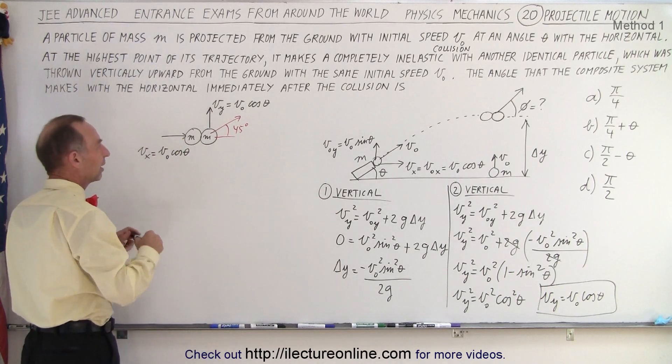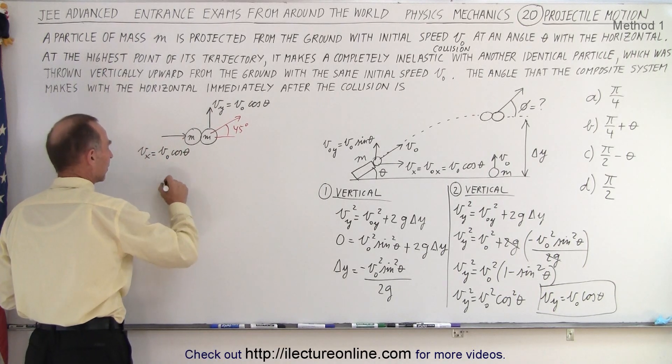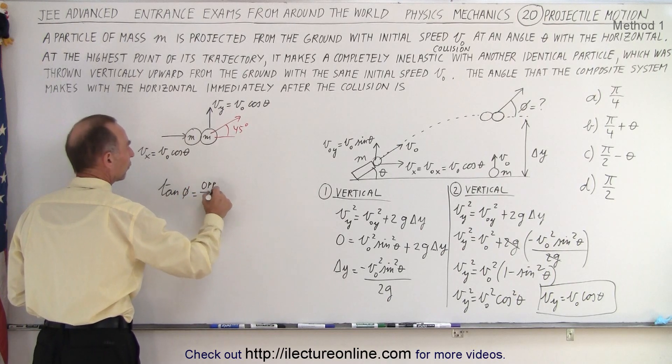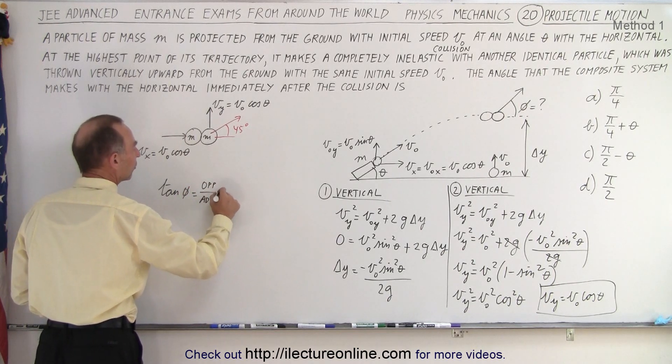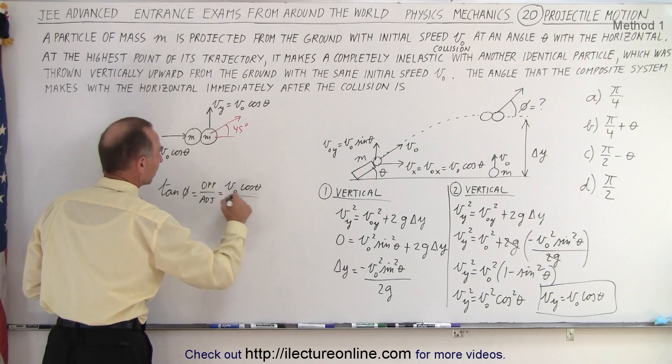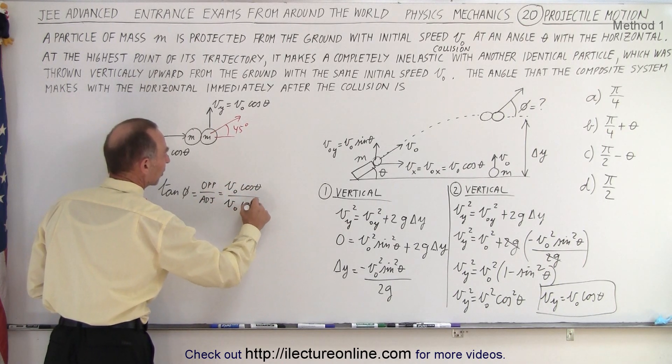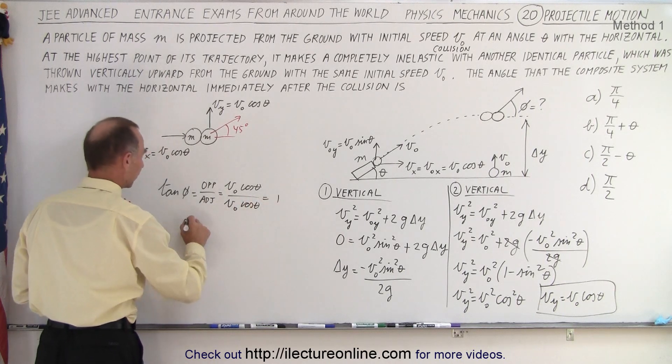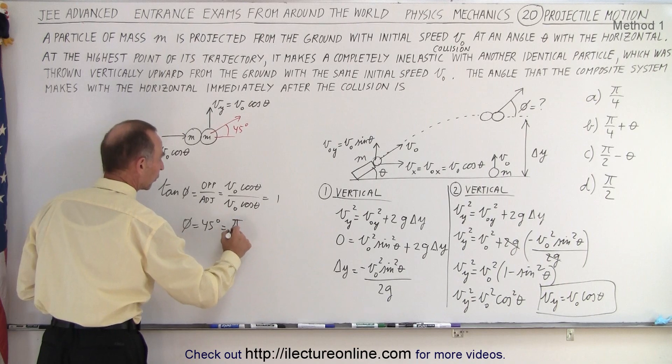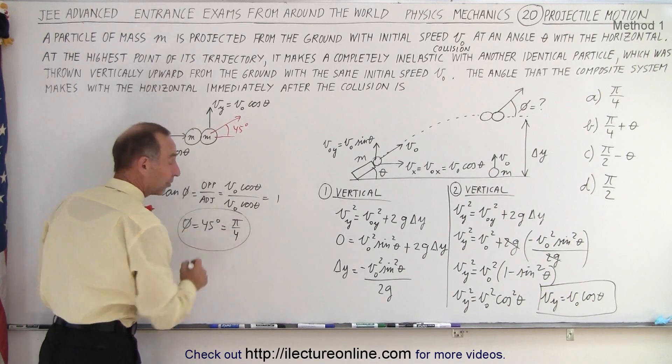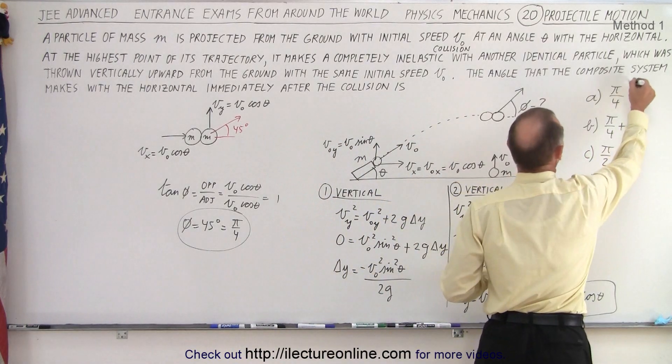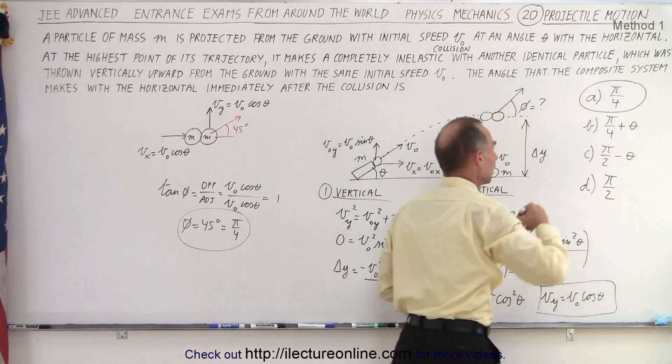The reason, of course, is that the angle tangent of phi will be equal to the opposite over the adjacent. In this case, the opposite velocity is v initial times the cosine of theta. The adjacent is v initial times the cosine of theta, which is 1. And therefore, phi equals 45 degrees or pi over 4. And so, is that one of the answers? And we come up here and sure enough, answer A fits the bill.